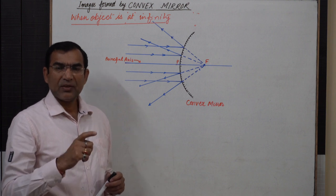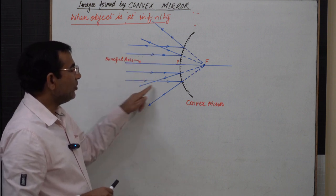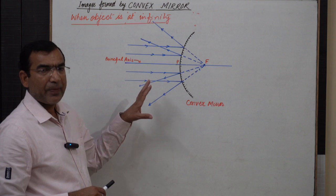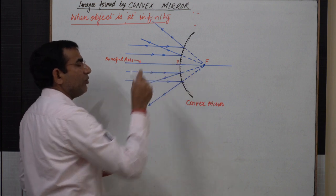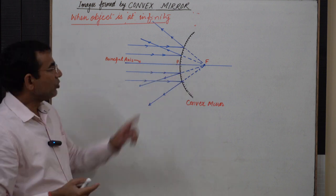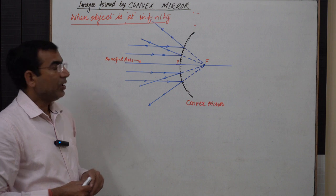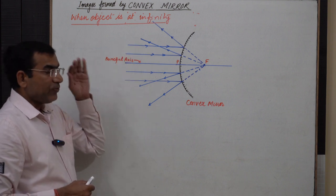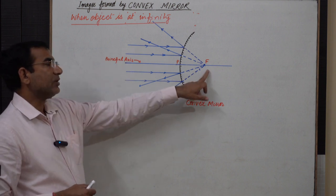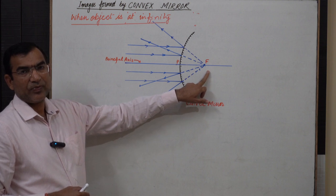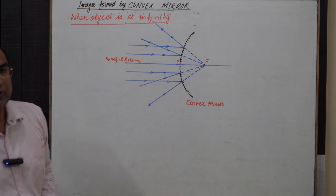When object is placed at infinity in front of a convex mirror, the light rays become parallel to each other. These parallel incident rays come from the object and fall on the convex mirror. Since a convex mirror is a divergent mirror, it diverges the light rays in different directions. When these light rays fall on the eye, they appear to be coming from a point that is the focus. The light rays do not actually come from the focus, but they appear to come from the focus.